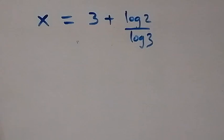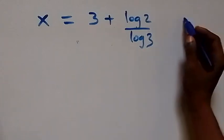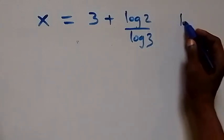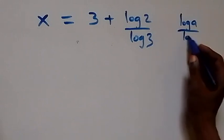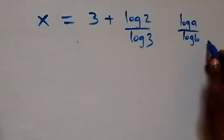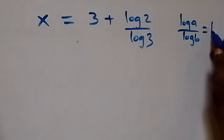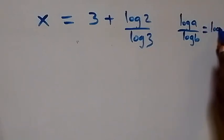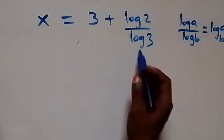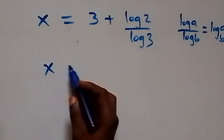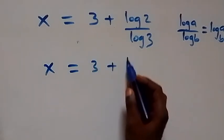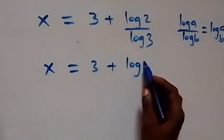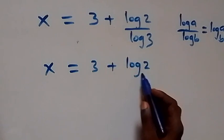From here we can rewrite this using the change of base formula. When we have log A over log B, that is the same thing as log A to base B. Therefore x equals 1 plus log 2 to base 3, which gives us the value of x for this problem.